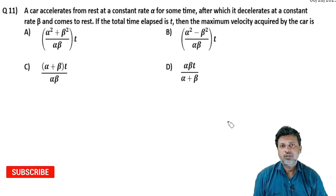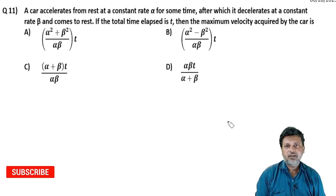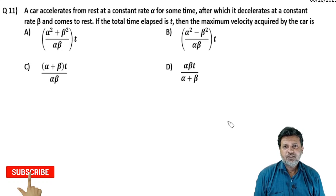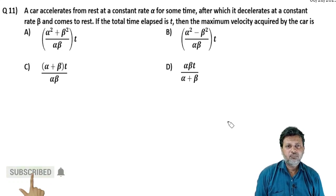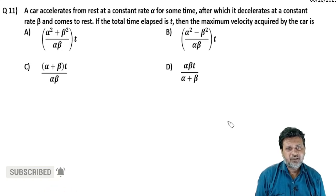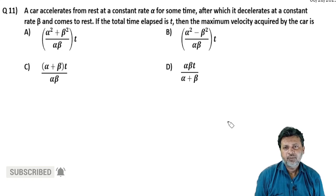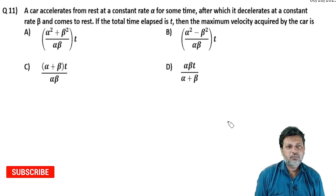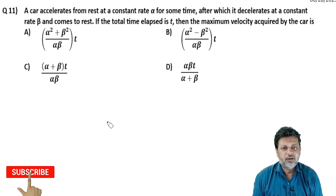Next question: a car accelerates from rest at a constant rate alpha for some time, after which it decelerates at a constant rate beta and comes to rest. If the total time elapsed is T, then find the maximum velocity acquired by the car.